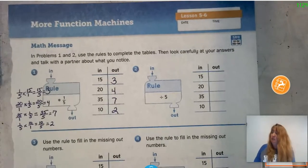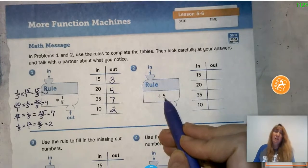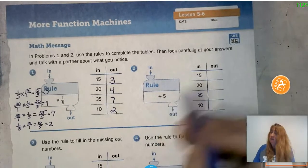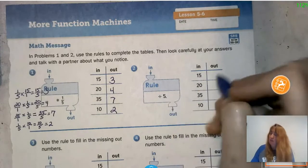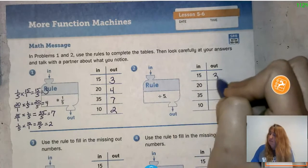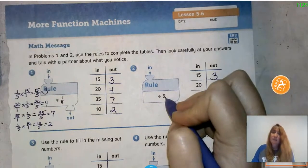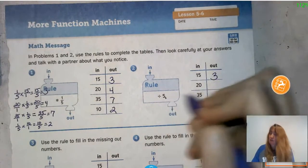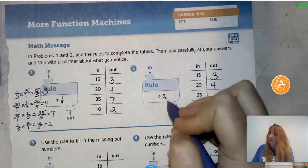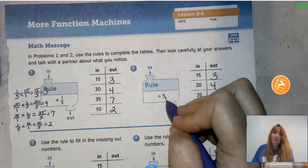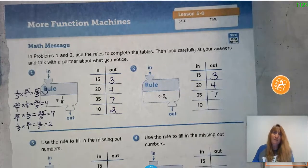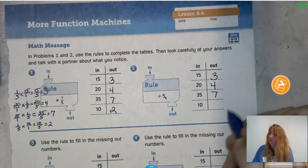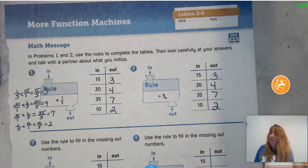Now for table 2, all we have to do is divide by 5. So: 15 divided by 5 is 3; 20 divided by 5 is 4; 35 divided by 5 is 7; and 10 divided by 5 is 2. You did that really fast!